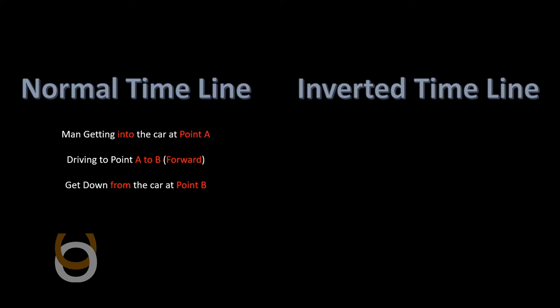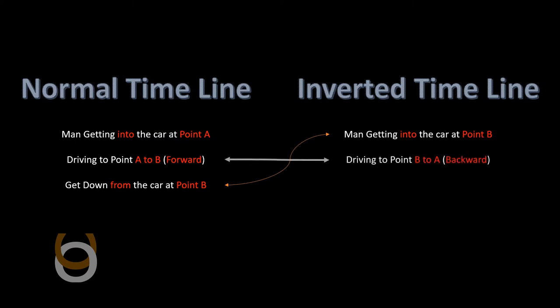Now we look into the inverted timeline. The inverted timeline starts from the last event of the normal timeline and moves all the way back to the beginning. Therefore, the first event of the inverted timeline will be the man getting into the car at point B. Then he drives the car from point B to point A backward. Finally, he gets down from the car at point A.